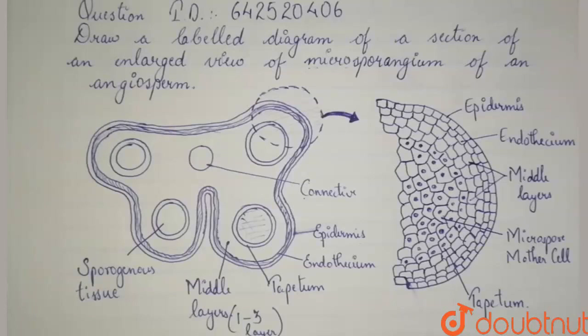Therefore, these were the parts of a typical microsporangium of an angiosperm plant.